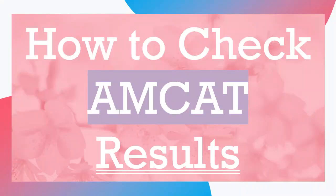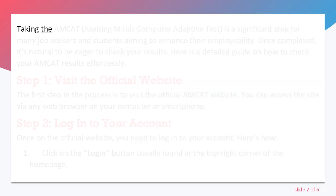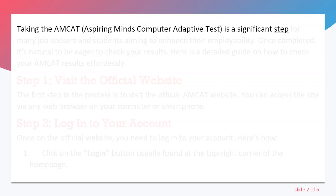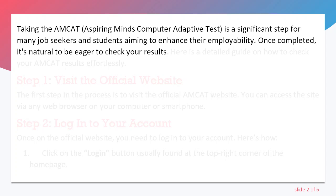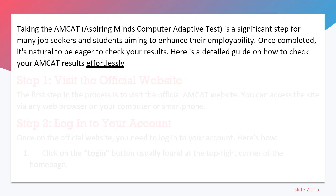How to Check AMCUT Results. Taking the AMCUT, Aspiring Minds Computer Adaptive Test, is a significant step for many job seekers and students aiming to enhance their employability. Once completed, it's natural to be eager to check your results. Here is a detailed guide on how to check your AMCUT results effortlessly.